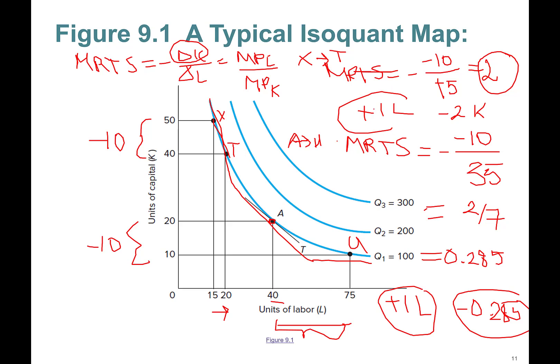We're on the same isoquant the whole time. When labor was scarce, adding one unit of labor freed 2 units of capital — great savings. But when you already have a lot of labor, adding one more unit only releases about one-quarter of a unit of capital. This concludes part one. I'll see you in part two.